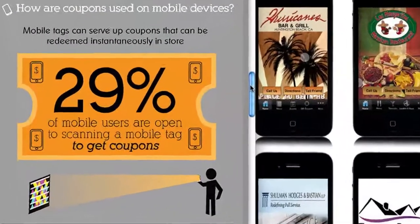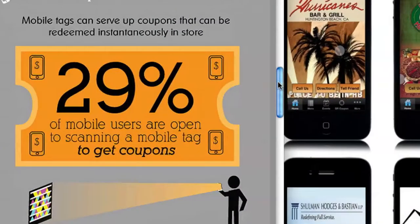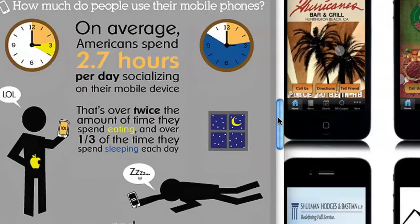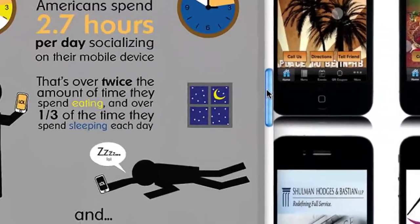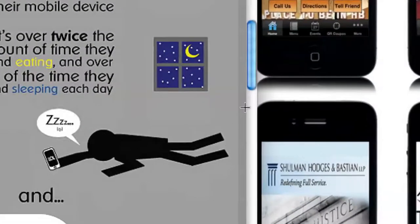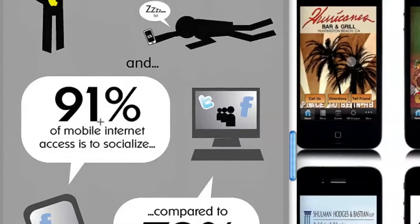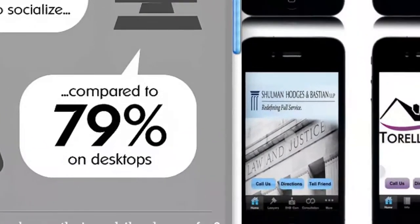29% of mobile internet users are open to scanning a mobile tag to get coupons — and that's higher today. On average, Americans spend 2.7 hours per day socializing on their mobile device. That's over twice the amount of time they spend eating and over a third of the time they spend sleeping each day.